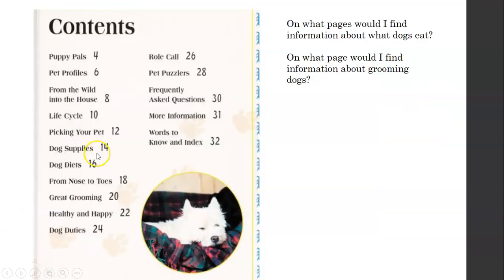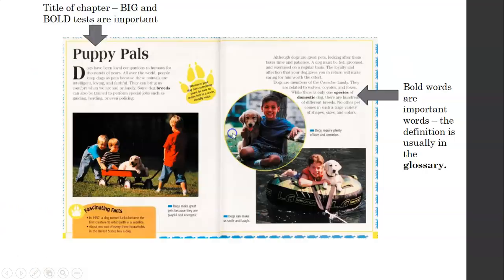So here we are. We're looking at chapter one, Puppy Pals. And I want you to look. Big and bold texts are important. Yes, I did spell that wrong. I spelled it test. Sorry. It's supposed to be texts or words. Big and bold words are important. Now, look. I see in the text, there's words that are bold. Bold means it's darker. And the word stands out from all these other words here aren't dark. And they don't stand out. But this word breeds does. And the same is true of these two words, species and domestic. These words stand out. And the reason that they are bold like that, or sometimes they'll be italicized like this one, is bold words are important words.